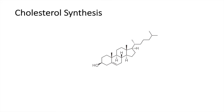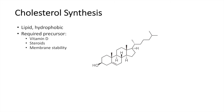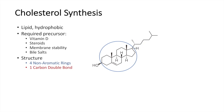Here is the chemical structure of cholesterol. Cholesterol is actually a lipid, which means it's hydrophobic. It's a required precursor for vitamin D production, steroid production, it's required for membrane stability, and it's required for the production of bile salts. The structure of cholesterol is characterized by four non-aromatic rings, one carbon double bond, one side chain, and one hydroxyl group.